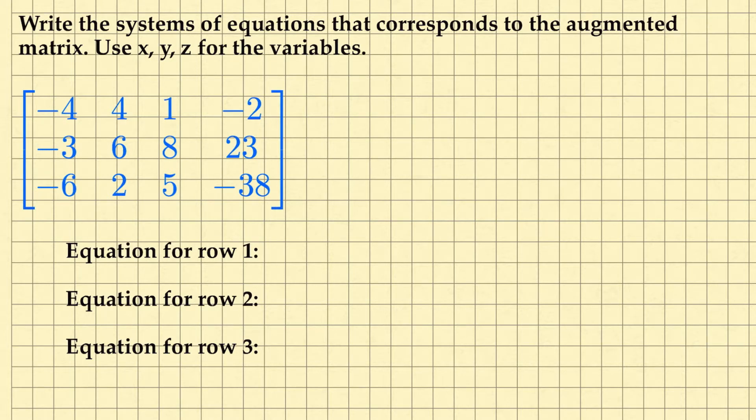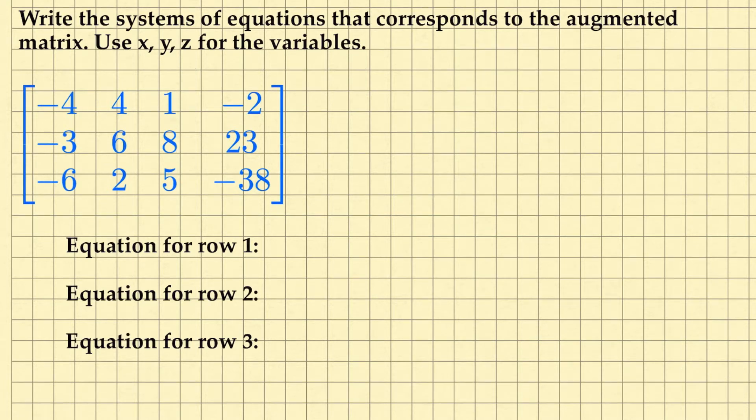So they want us to use x, y, and z. So our first column is going to be all of our x variables. The second column will be for all the y's. The third column will be for the z's. And the last column will be your constant column.